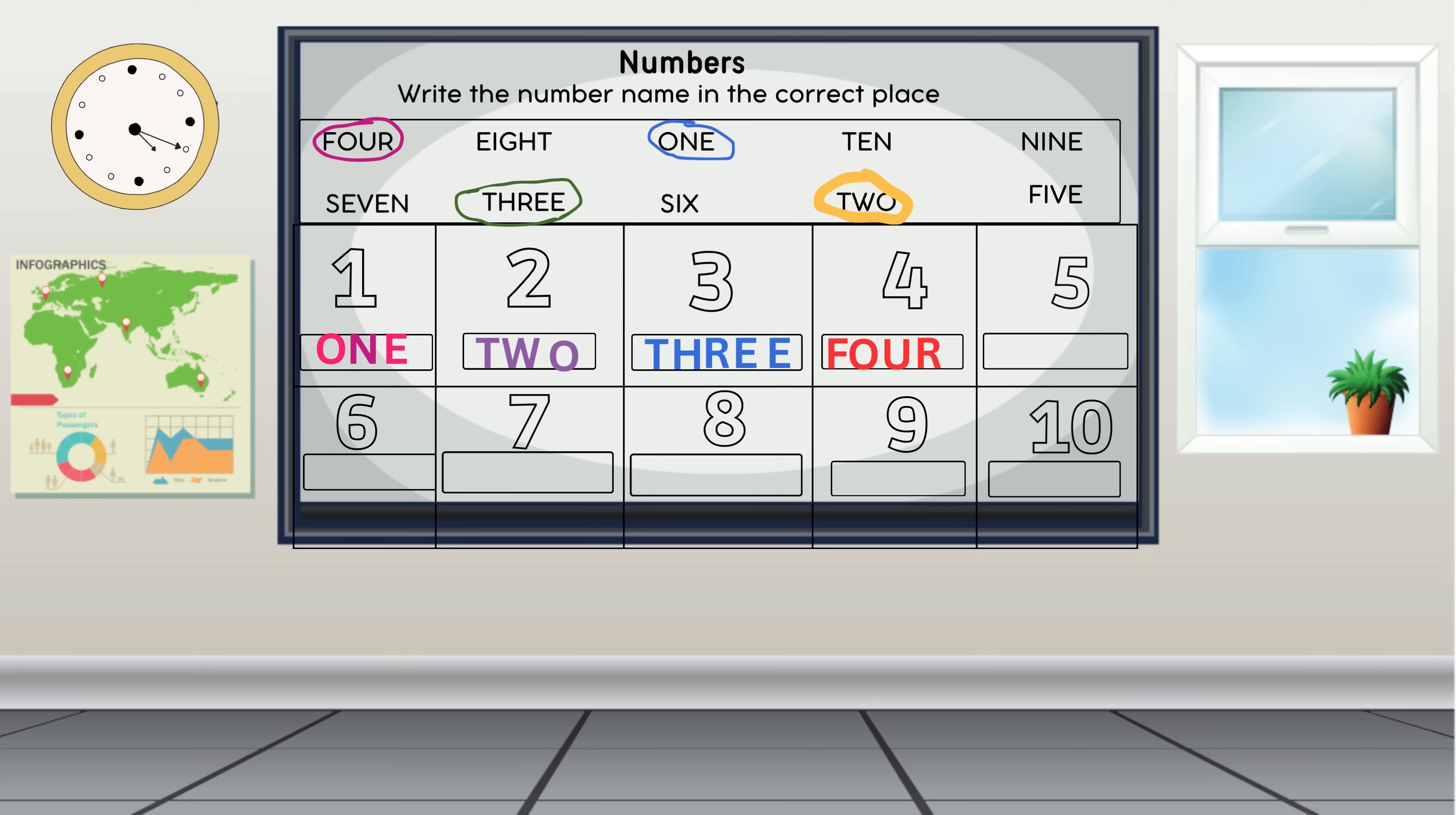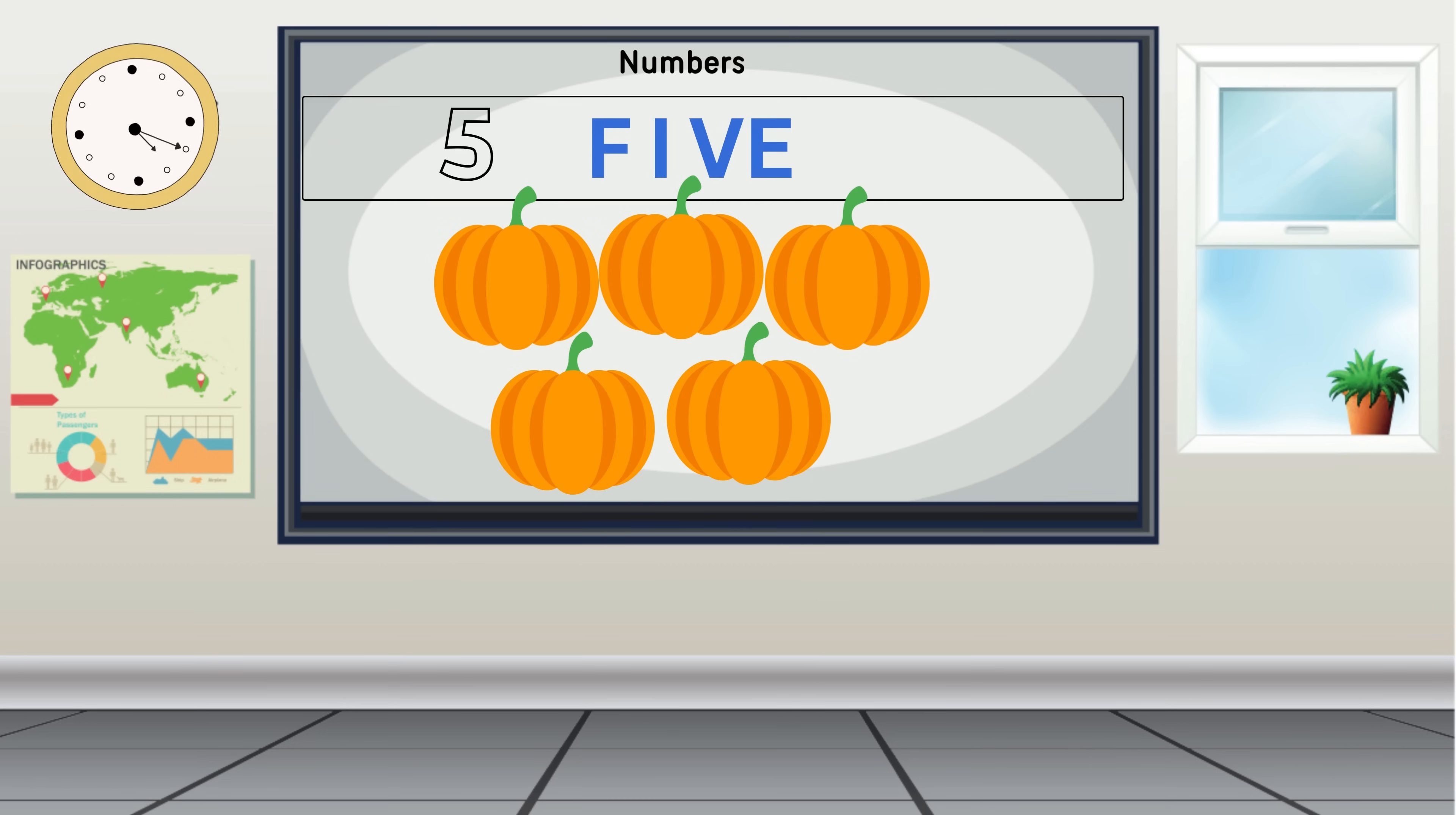Let's proceed to learn about the number five. Let's find the number name for five from the word bank. Where is five? Right there. Let us circle five together. Let's spell and write five: F-I-V-E. That's right, the number name for five is F-I-V-E.